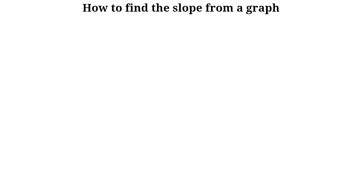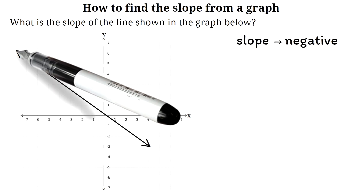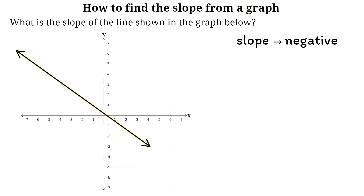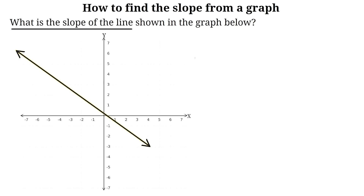Let's look at an example to see how to find the slope from a graph. Just by looking at the graph, we can do a quick check: the slope must be negative because the line goes downward from left to right, just like we learned earlier. But we want the exact numerical value, so let's count the rise and the run. When finding slope m from a graph, we still use the same idea — the change in y over the change in x.